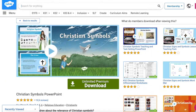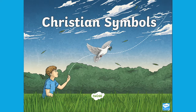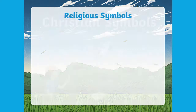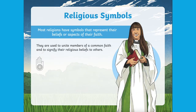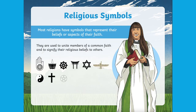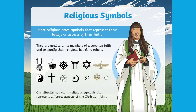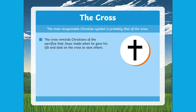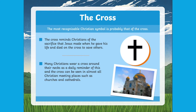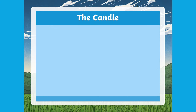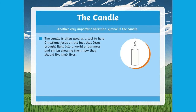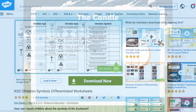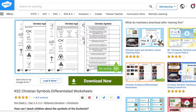Let's start by having a look at the Christian Symbol PowerPoint. Use this PowerPoint to teach children about the nine different Christian symbols and why they are significant to Christians. Some of the symbols discussed include the Bible, the cross, bread and wine, and doves. Once you've discussed the PowerPoint with your class, why not try and test their knowledge with these differentiated Symbol of the Eucharist worksheets.